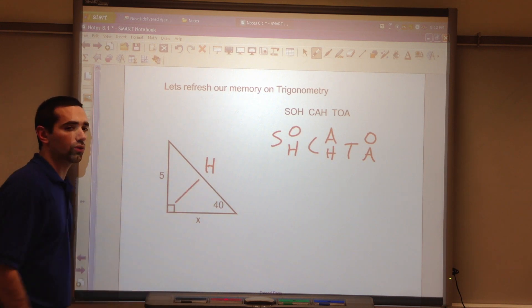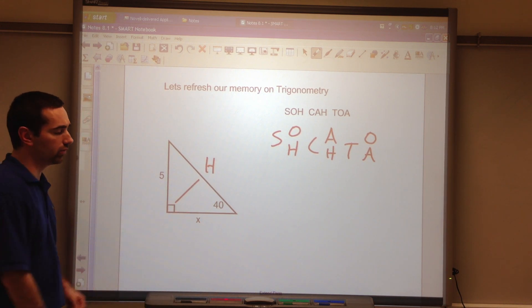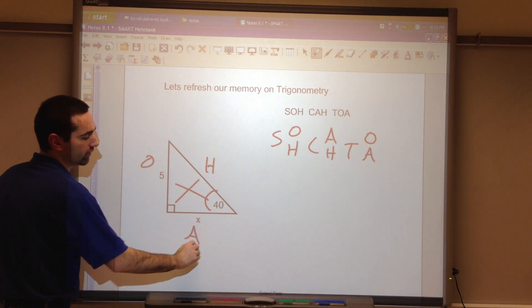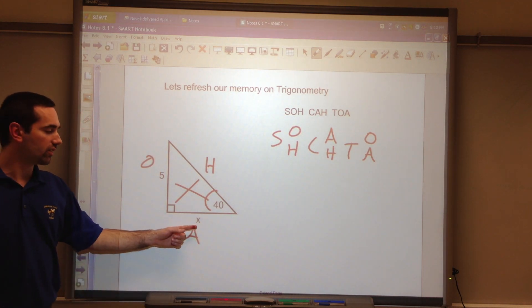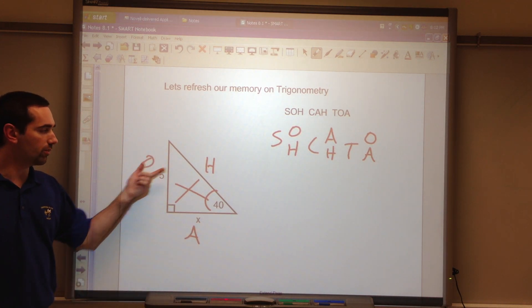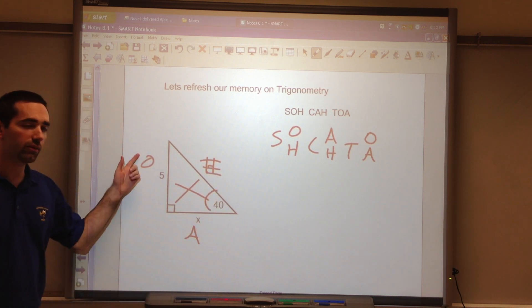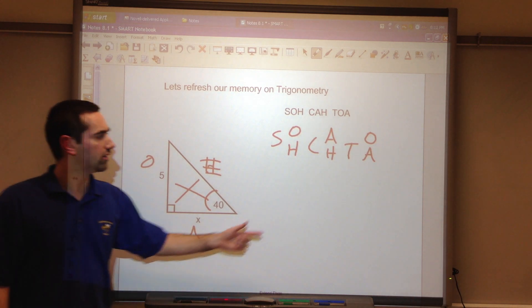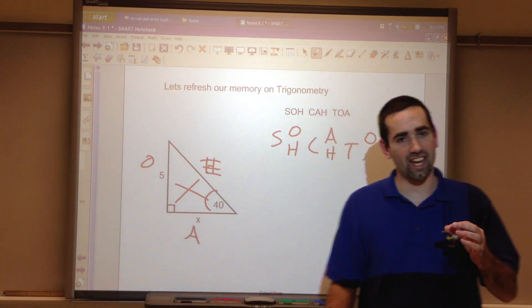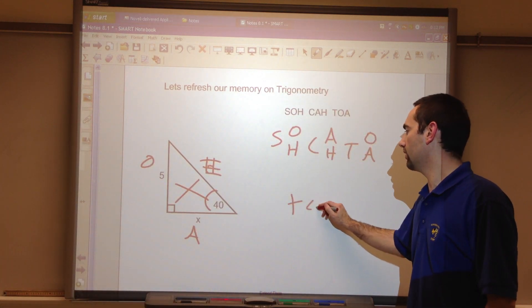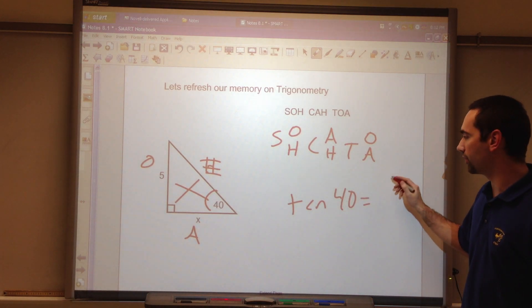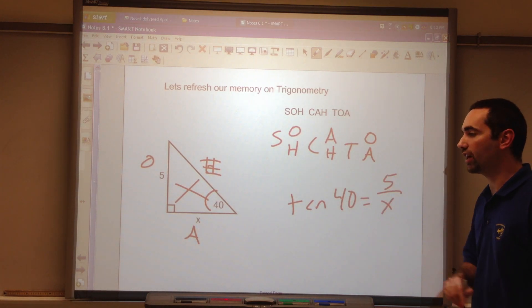Hypotenuse is always across from the 90 degree angle. Opposite, adjacent. I'm solving for X. Here's an X. Here's a number. Nothing here in hypotenuse. I'm not going to use it. Leave me with O and A. TOA. Tangent. Tangent of the angle is the opposite over the adjacent.